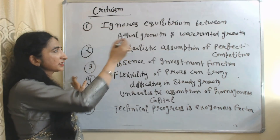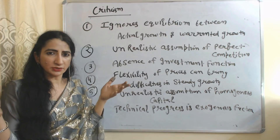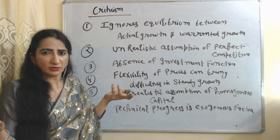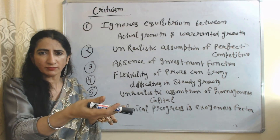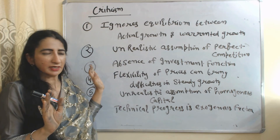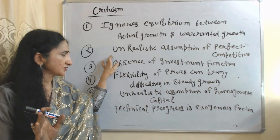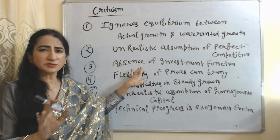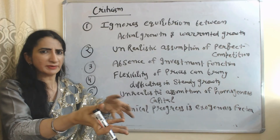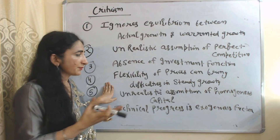Now we will see the criticisms of this model. First, it ignores equilibrium between actual growth rate and warranted growth rate — the Harrod-Domar model addresses this but Solow ignores it. Second, the assumption of perfect competition is unrealistic. Third, there is an absence of a proper investment function — the model only says investment equals sY, which is insufficient.